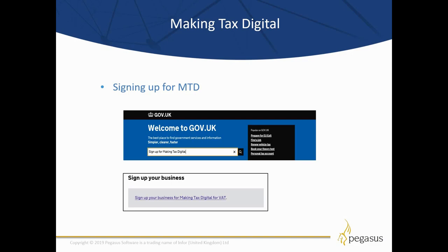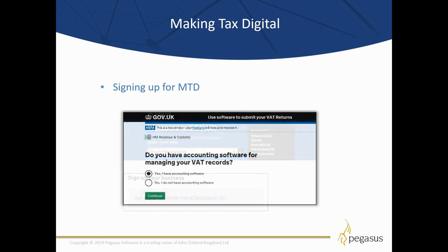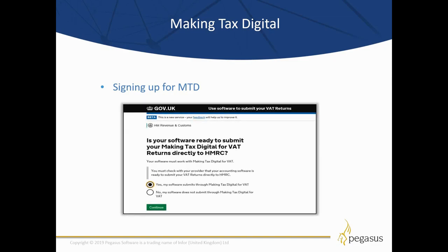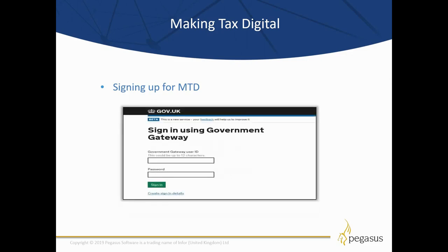From that page you will find a link that allows you to sign up your business to Making Tax Digital. Just bear in mind the following screens may vary because HMRC might update them. The first question you'll be asked is 'do you have accounting software for managing your VAT records?' — the answer is yes, because you're using Opera 3. The next question is 'is your software ready to submit your Making Tax Digital for VAT returns directly to HMRC?' — again the answer is yes, my software submits through Making Tax Digital for VAT, because you are using Opera 3. Then press Continue.